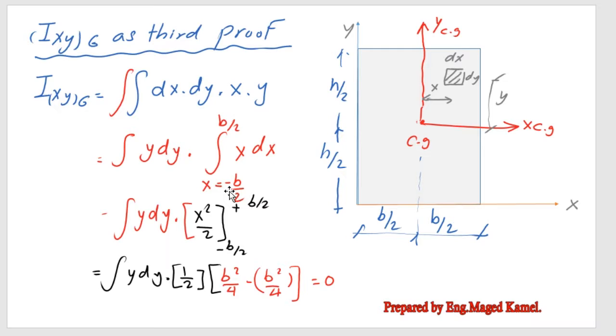This will give us B squared over 4 divided by 2 minus minus B over 2 divided by 2. This value will cancel each other, so the one half will come out and this multiplied by B squared over 4 minus B squared over 4, this will cancel each other.